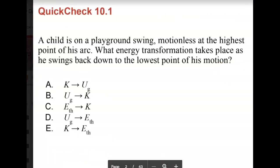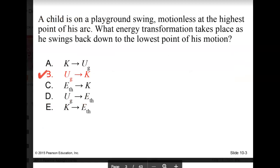number one, the child on the playground swing, motionless, highest point of his arc. What energy transformation occurs as he swings back down to the low point? Well, height is being turned into speed. So as you might imagine, B is the correct choice. Going to go pretty fast here. You can always pause this video and rewind if you so desire.